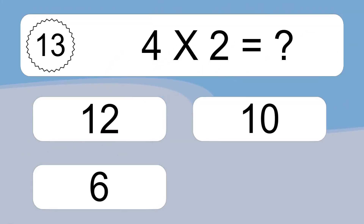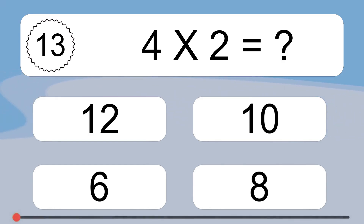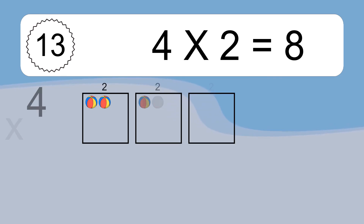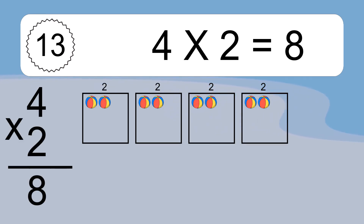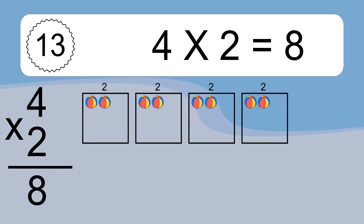4 times 2 equals what? 4 times 2 equals 8. We have 4 boxes and each box has 2 colorful balls inside. If you count all the balls in all the boxes together, you will have 4 times 2 balls. This equals 8 balls.